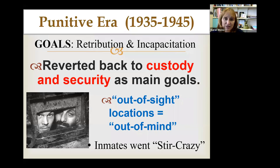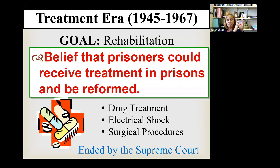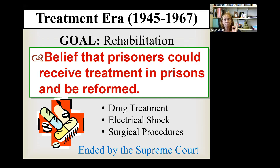Since just locking people up wasn't working and we were seeing all these mental problems, we started swinging again toward the treatment era. Moving away from retribution and back toward rehabilitation, the idea was that if people are committing crimes, it must be because something is medically wrong with them. If we could figure out their medical condition, we could do something medically to make them better so they won't commit more crimes. It became a much more medically controlled environment.